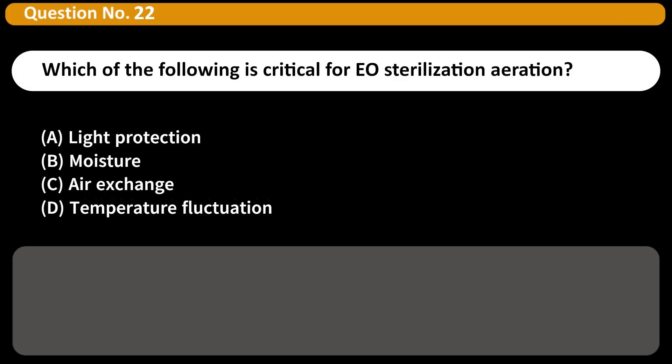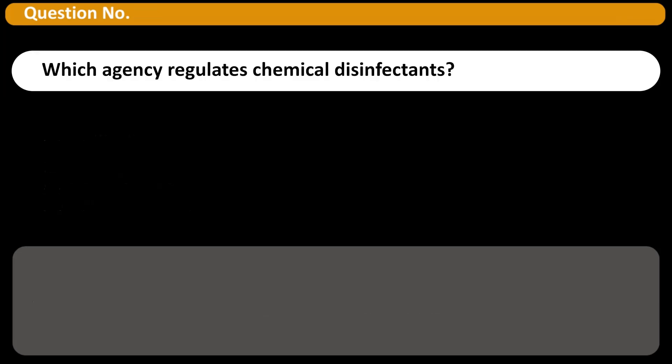Which of the following is critical for EO sterilization aeration? A. Light protection, B. Moisture, C. Air exchange, D. Temperature fluctuation. Answer C. Aeration removes residual EO gas through controlled air exchange.